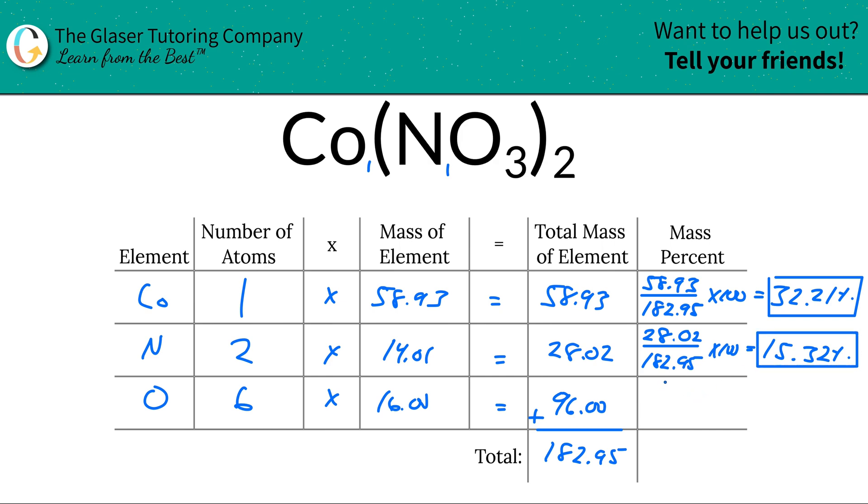Last but not least, we would do the same thing for oxygen. So we do 96 divided by 182.95, multiply that by 100, and you're going to get 52.47%.